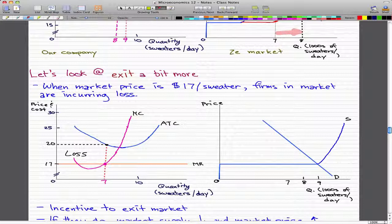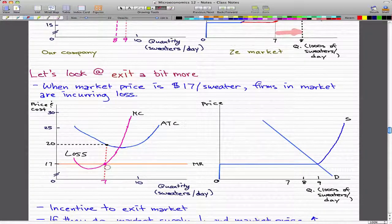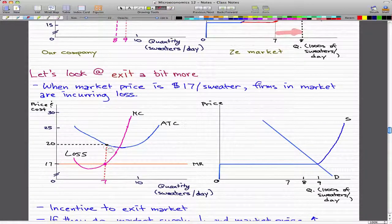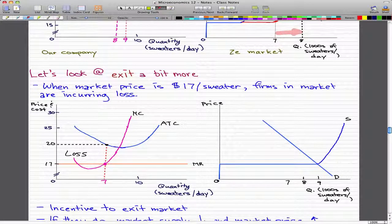When the market price is $17 per sweater, firms in the market are obviously incurring an economic loss. As you see here, the average total cost is way above the marginal revenue or price, and the difference is what we call a loss.